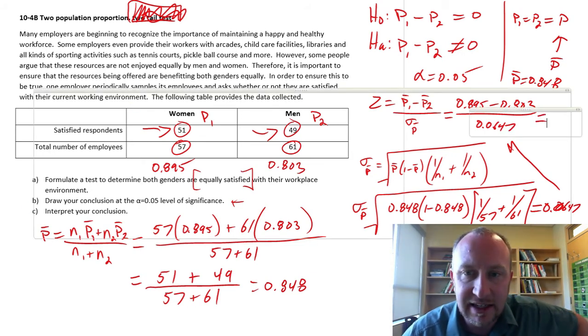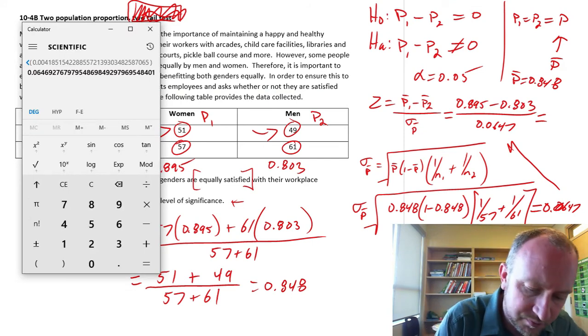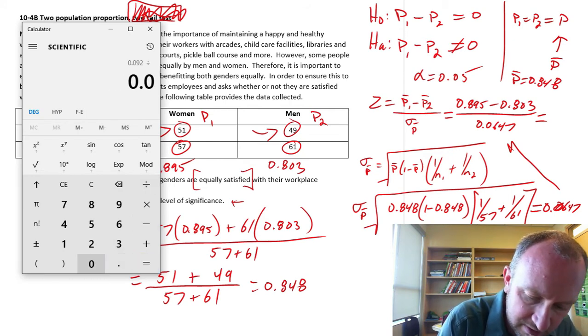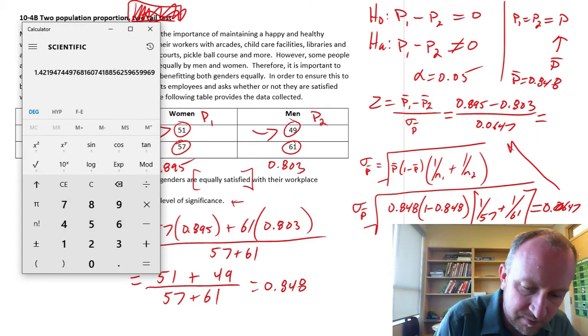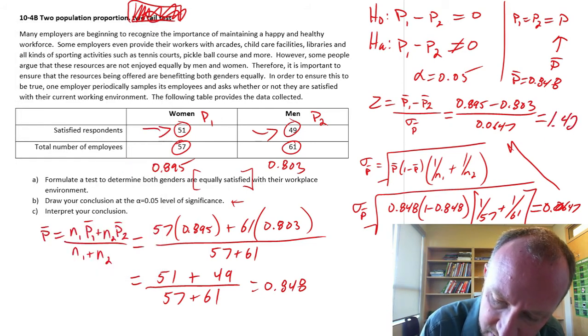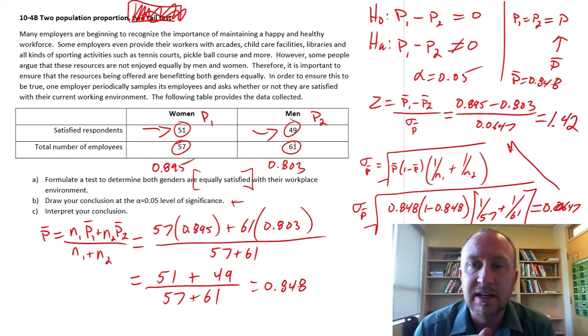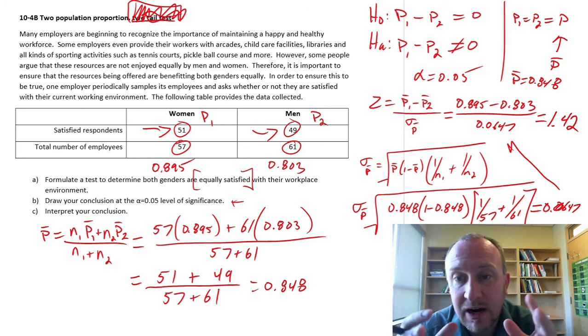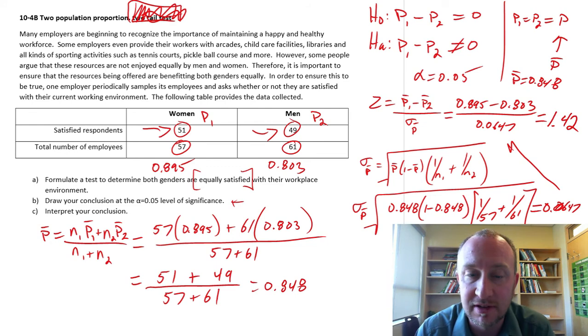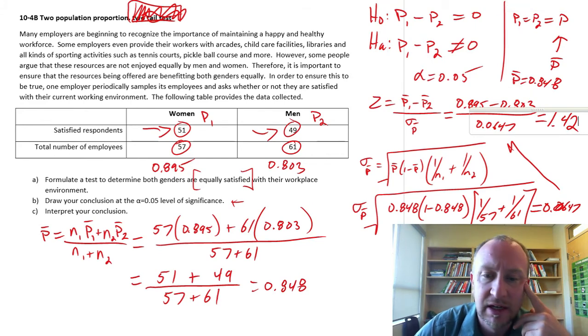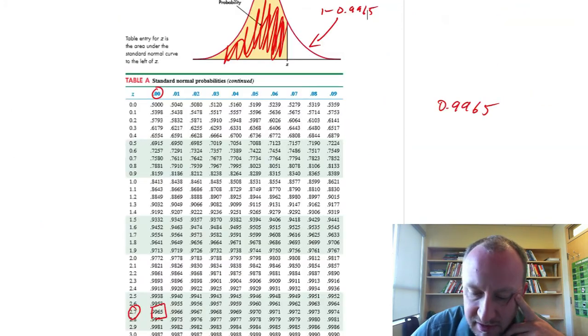So now finally, after all of that, there's my denominator, 0.0647. And so finally, our Z statistic is 0.895 minus 0.803 divided by 0.0647 equals 1.42. After all of those calculations, we get that Z statistic. That's what we've been working towards. Now we want to find what is the p-value that corresponds to that Z statistic. For that, now we go to our Z tables.